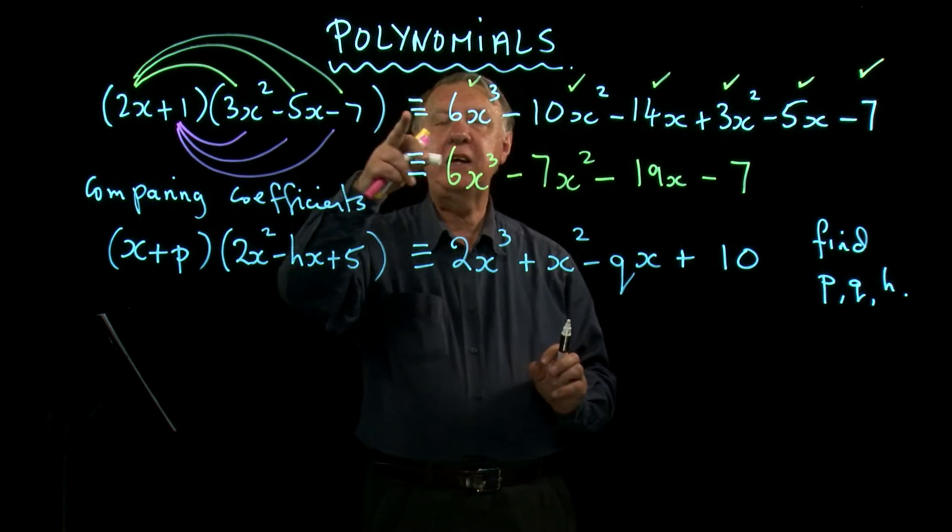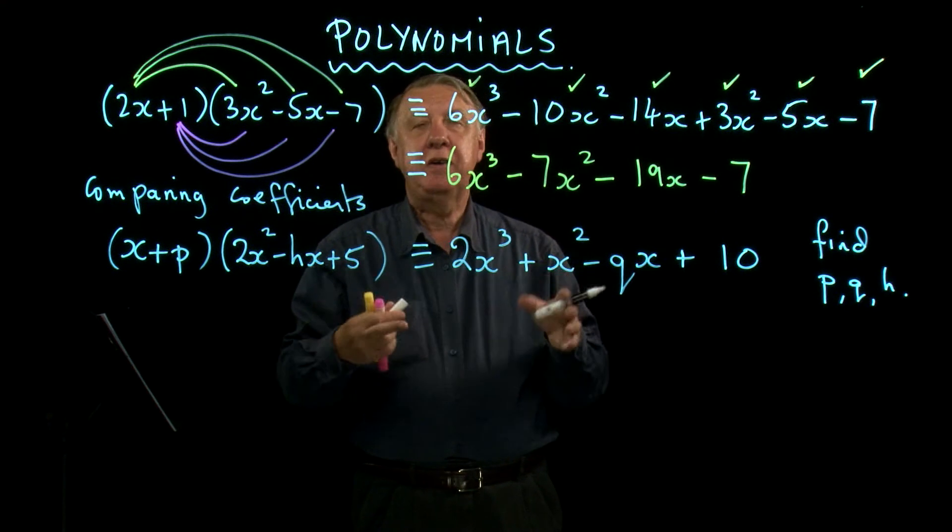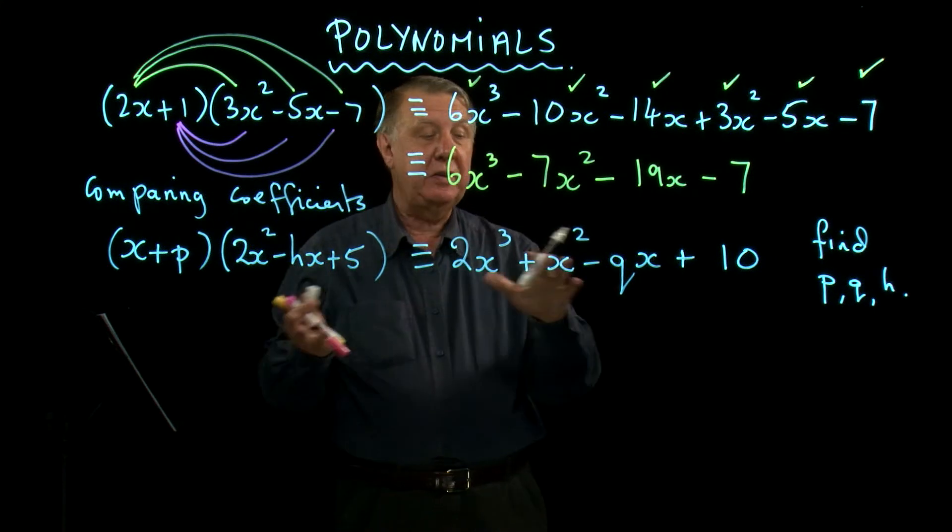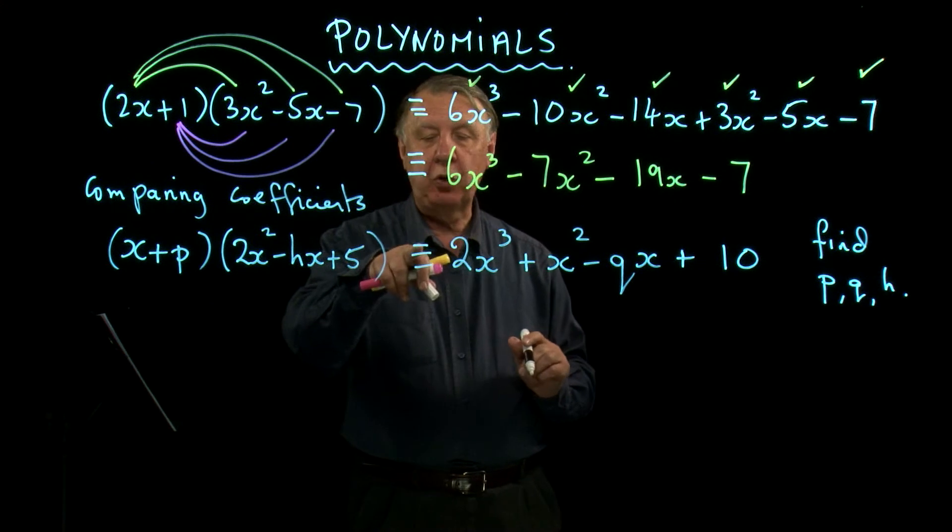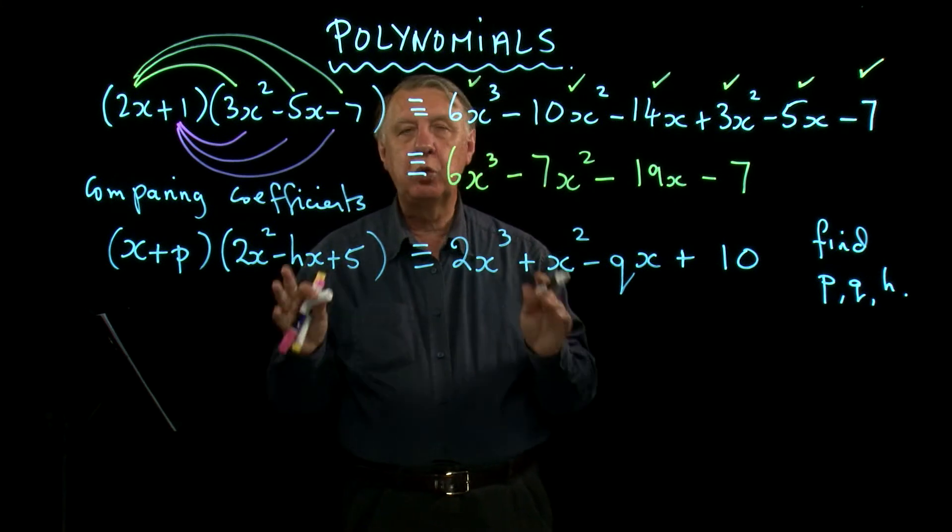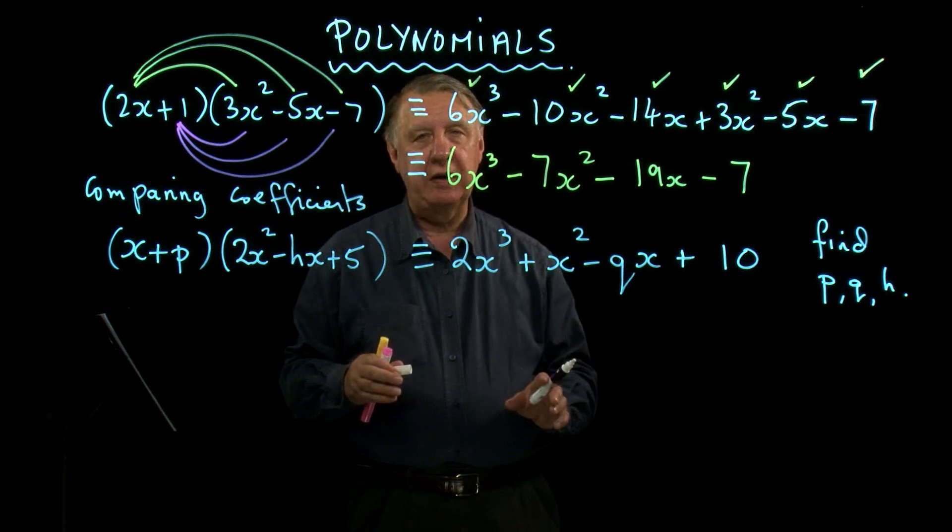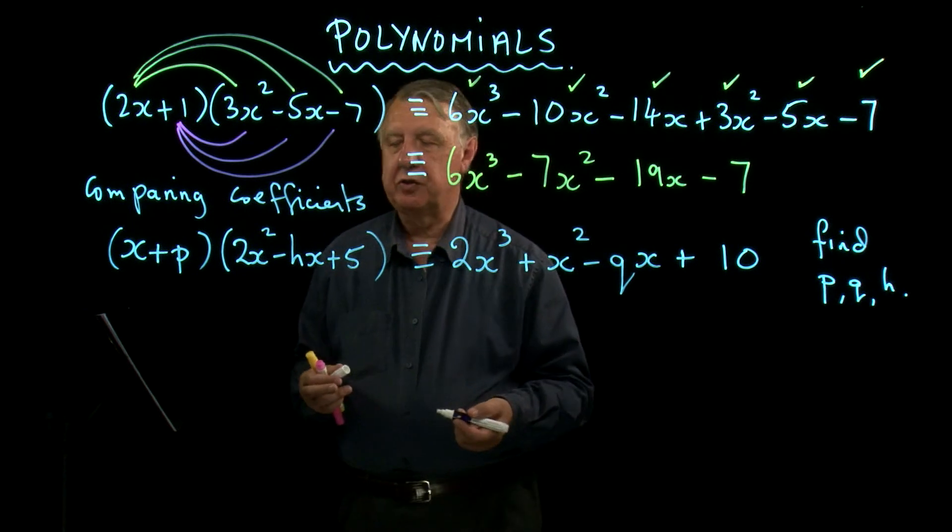If we have an equal sign, strictly speaking, it means solve it. So if you were given this equals that, it's sort of saying I want you to solve it to find x. But we've got the 3-line here, so all this is telling us is that that side is exactly the same as that. And that's very important in this method of comparing coefficients.